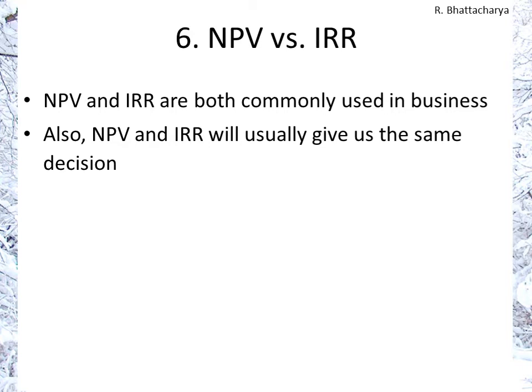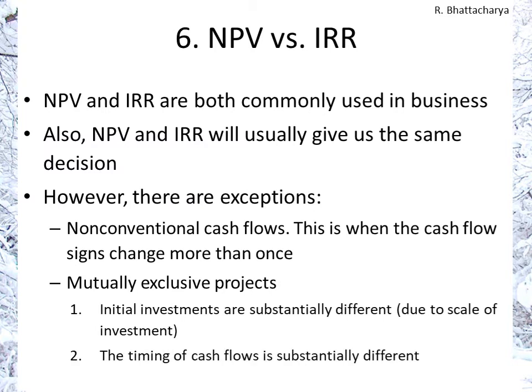There are however a couple of exceptions. The first case is when we have non-conventional cash flows. A conventional cash flow is one where the initial cash flow is negative — in other words you pay out initially — and all other cash flows afterwards are positive. A non-conventional one is where you run into a negative cash flow again later, so the sign changes on the cash flow more than once.